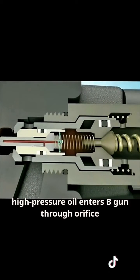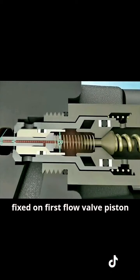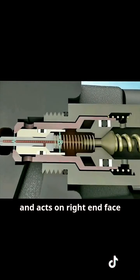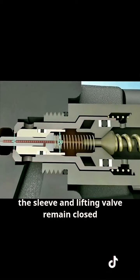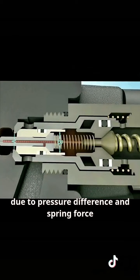When excavator operates normally, high-pressure oil enters the big gun through an orifice fixed on the first flow valve piston and acts on the right-end face of the valve sleeve and lifting valve. Due to cavity B's larger effective area, the sleeve and lifting valve remain closed due to pressure difference and spring force.